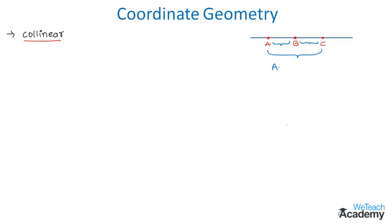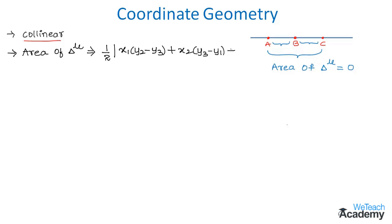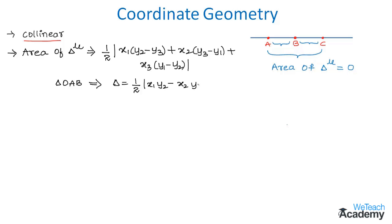One more condition: if the area of the triangle formed by the three points is equal to zero, then only we can say that these points are collinear. The formula to find the area of a triangle is: Area = ½ |x1(y2 − y3) + x2(y3 − y1) + x3(y1 − y2)|. If we need to find the area of a triangle with vertices at the origin, A, and B, the formula simplifies to: Δ = ½ |x1·y2 − x2·y1|.